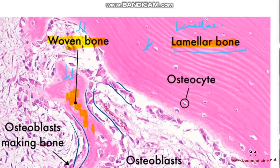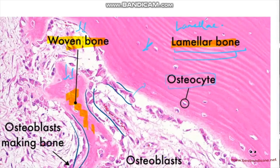After the woven bone ossifies and mineralizes to form crystals, the mineralized matrix is arranged in layers called lamellae, forming lamellar bone. We studied different kinds: external circumferential lamellae, the circular lamellae in Haversian systems or osteons, and interstitial lamellae. As osteoblasts form new bone, they disengage from the osteoblast layer and become part of the lamellar bone as inactive osteocytes.